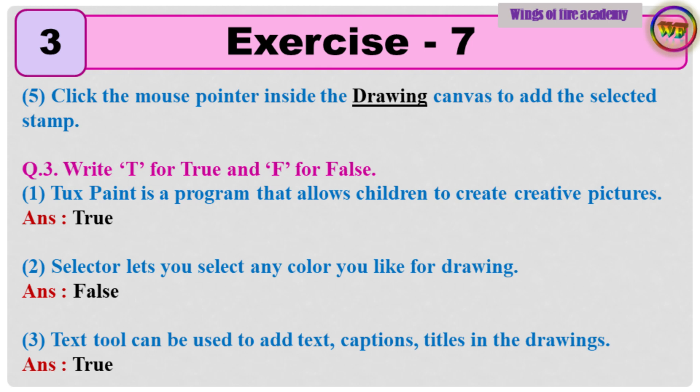Question 3. Write T for True and F for False. 1. Tuxpaint is a program that allows children to create creative pictures. Answer: True. 2. Selector lets you select any color you like for drawing. Answer: False.